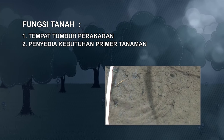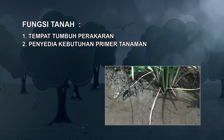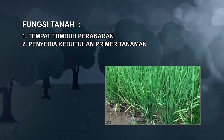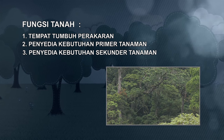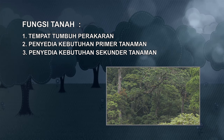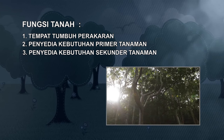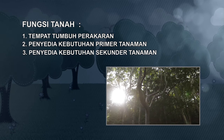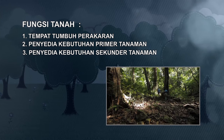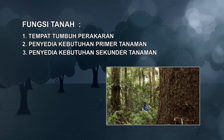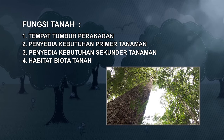Kedua, penyedia kebutuhan primer tanaman, contohnya air, udara, dan unsur-unsur hara. Ketiga, penyedia kebutuhan sekunder tanaman, misalnya zat-zat pemacu tumbuh yaitu hormon, vitamin, dan asam-asam organik, antibiotik, dan toksin anti-hama, serta enzim yang dapat meningkatkan persediaan hara. Keempat, habitat biota tanah.